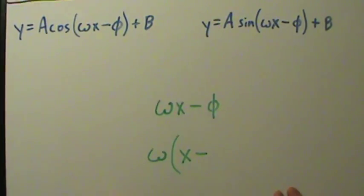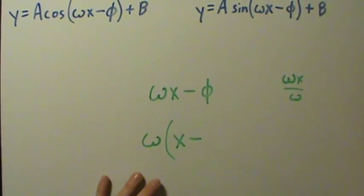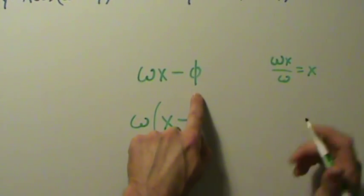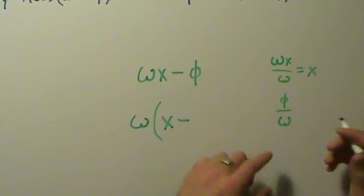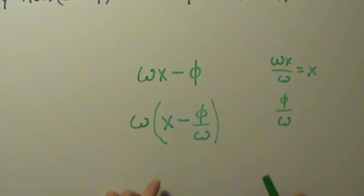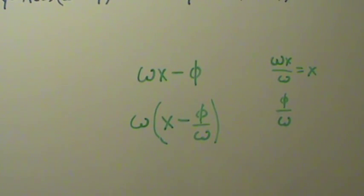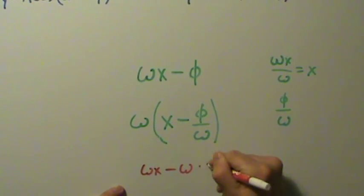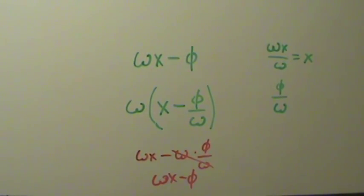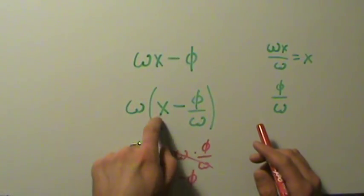Factoring is kind of like dividing. If we have omega x and factor out the omega, that's like saying omega x divided by omega, which is just x. If we factor out omega from phi, that's like phi divided by omega, which gives us phi over omega. So omega x minus phi factors to omega times the quantity x minus phi over omega. It's easier to see going the other way: distributing omega gives omega times x minus omega times phi over omega, the omegas cancel, and we get omega x minus phi.